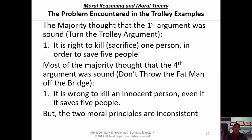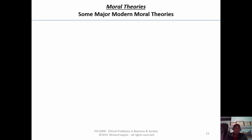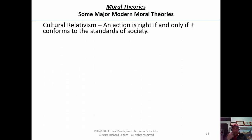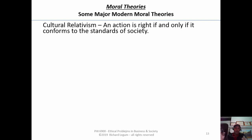I'd like to turn to an overview of some moral theories proposed by philosophers to answer this question. The question they're asking is: what makes a certain act right or wrong? If you define what's right, by contrast, anything that isn't right is wrong. When we were looking at cultural relativism, we have this fundamental principle — the criterion of morality that captures the essence of cultural relativism — that an action is right if and only if it conforms to the standards of society. We saw how that was intended to reconcile our inconsistent moral principles.